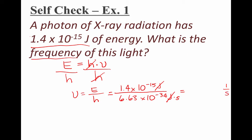Taking out the calculator and dividing 1.4 times 10 to the minus 15th joules by 6.63 times 10 to the minus 34th joule seconds, I get 1.5082956 times 10 to the 18th. Now I'll round this number. Looking at my measurement, there are two significant digits, so I'm limited to two significant digits in my answer. I write 1.5 times 10 to the 18th power, with units of per seconds, or hertz.